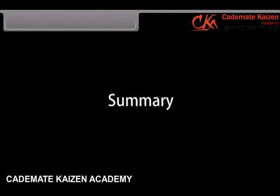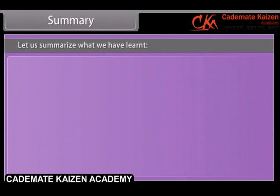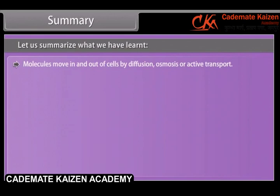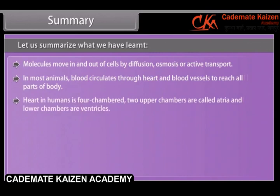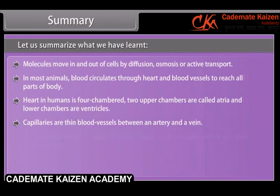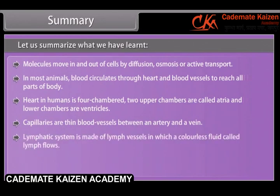When the SA node fails to function, an electronic device called a pacemaker is implanted into the chest of the patient to maintain heartbeat. Let us summarize what we have learned. Molecules move in and out of cells by diffusion, osmosis or active transport. In most animals blood circulates through the heart and blood vessels to reach all parts of the body. The heart in humans is four-chambered; the two upper chambers are called atria and the lower chambers are ventricles. Capillaries are thin blood vessels between an artery and a vein. The lymphatic system is made of lymph vessels in which a colorless fluid called lymph flows.